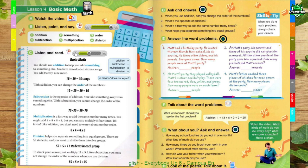Multiplication is a fast way to add the same number many times. You might add 8 plus 8 plus 8 plus 8, but you can also multiply 8 4 times. It's faster. Like addition, you don't need to worry about number order.